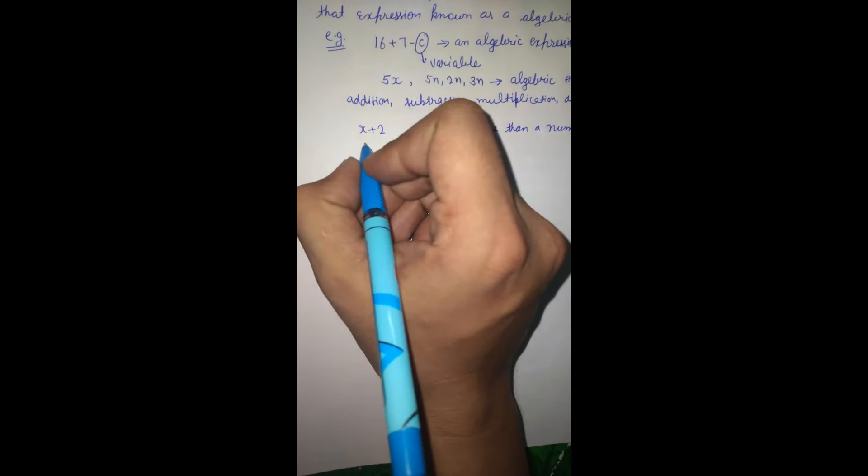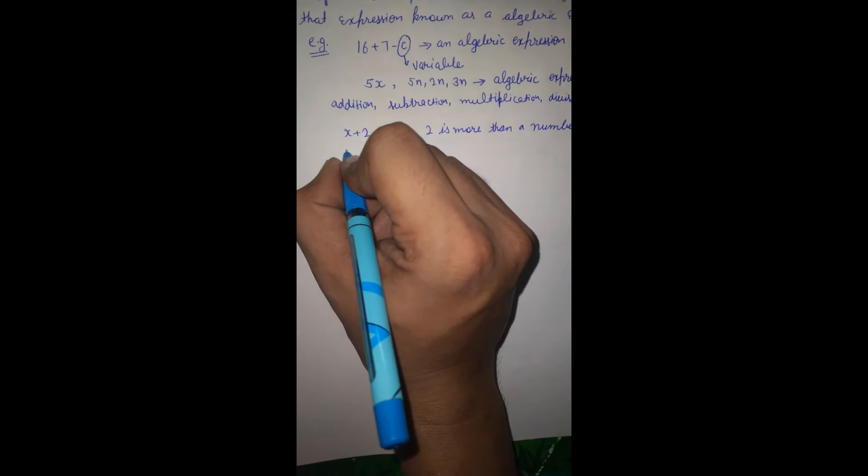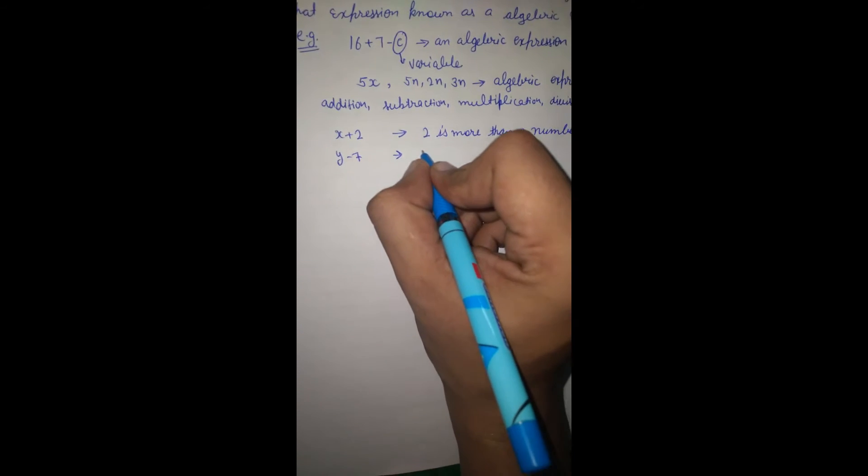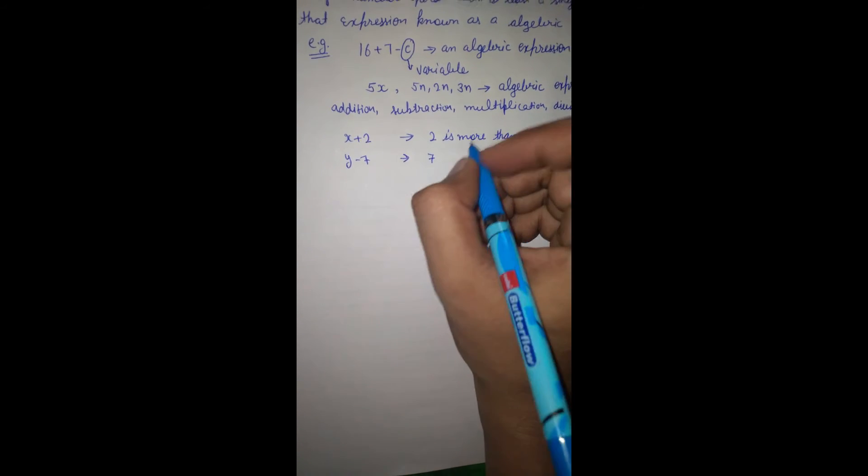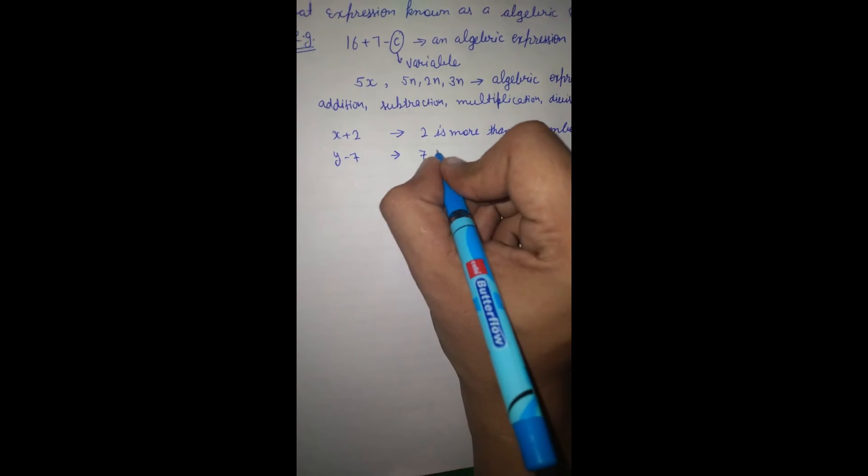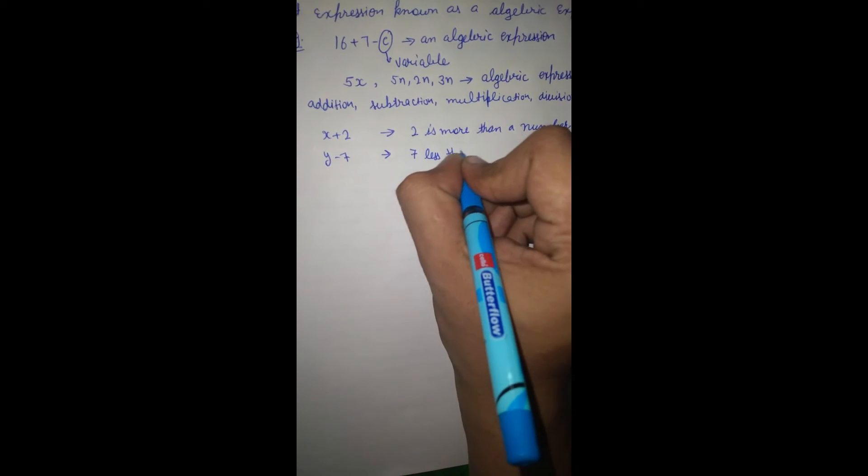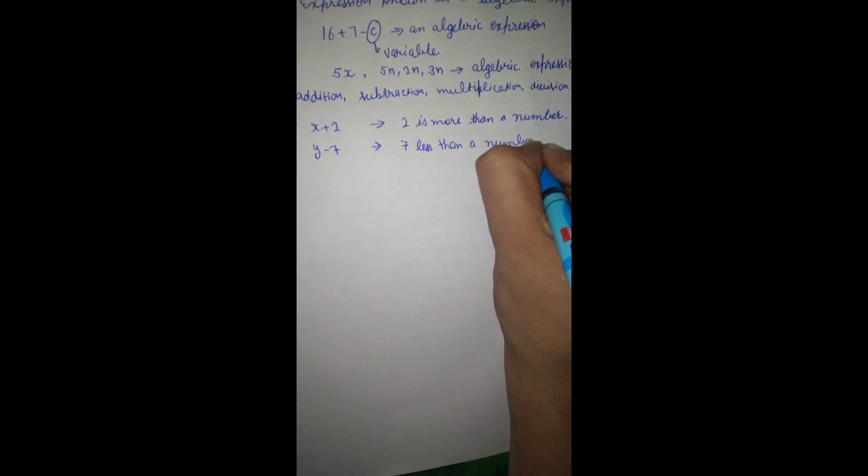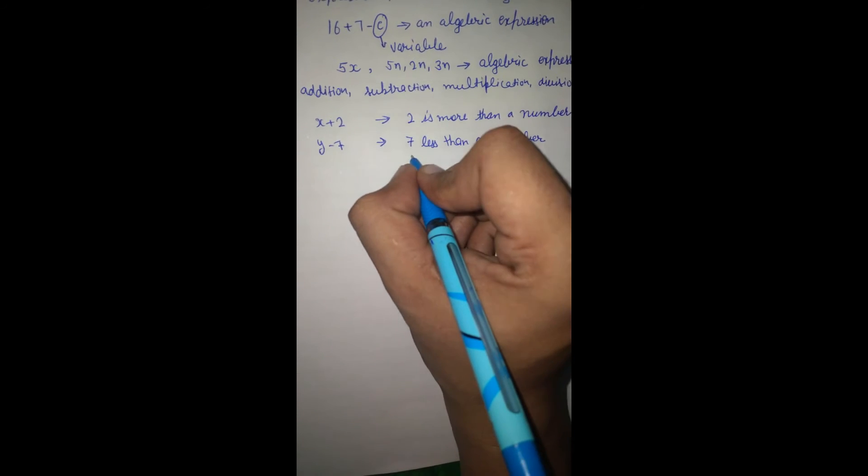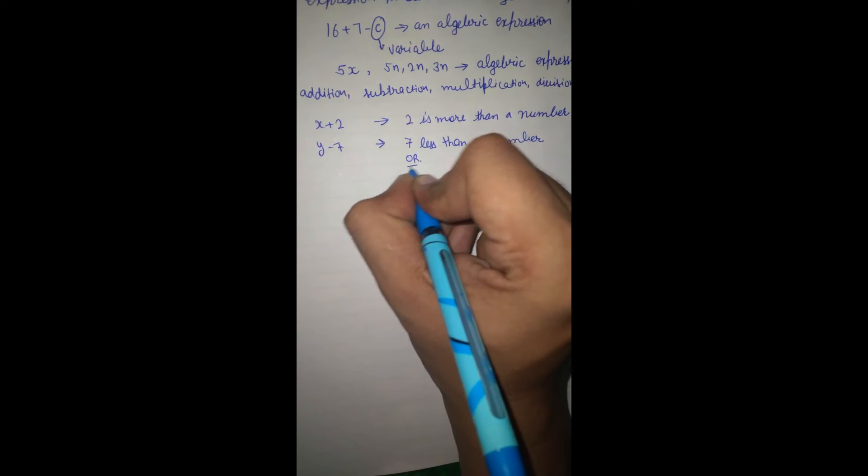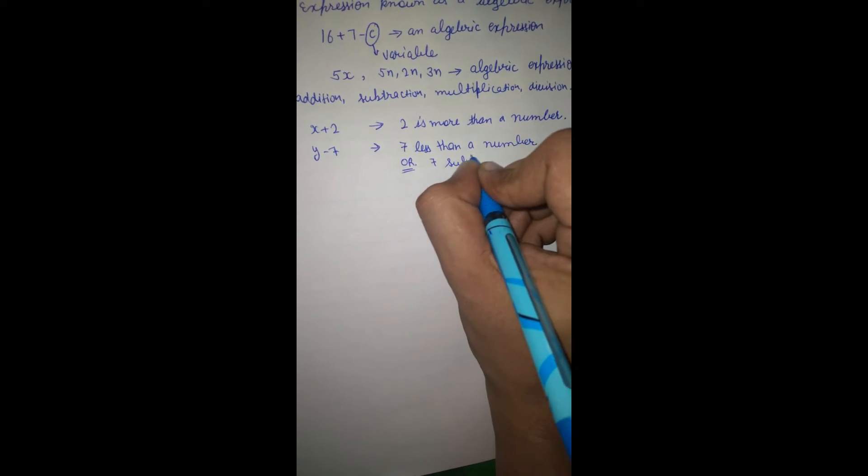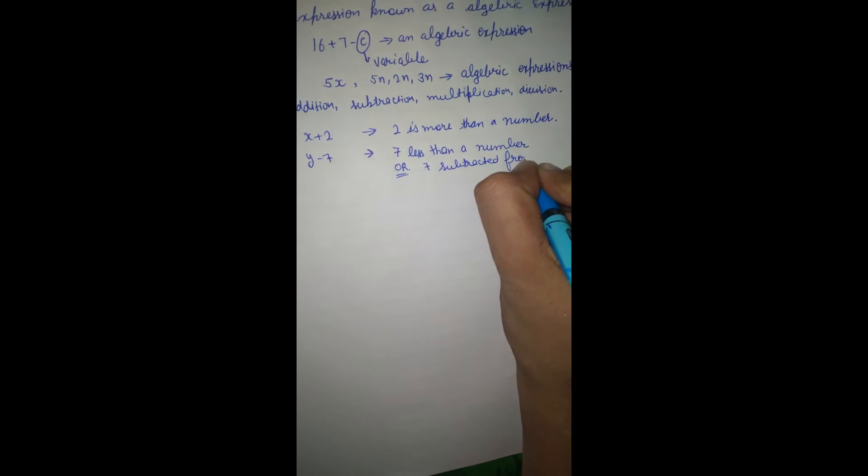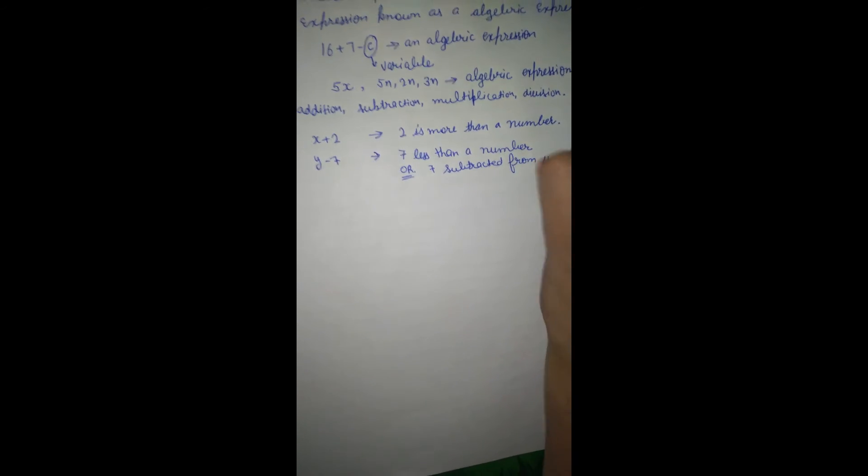If we have y minus 7, it means 7 less than a number, or 7 subtracted from y.